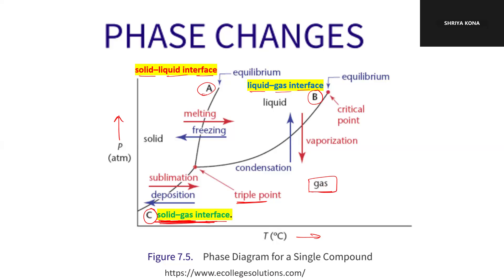The triple point is a point at which solid, liquid, and gas coexist together. When you are below the triple point, you can go directly from solid to gas via the process of sublimation. And definitely, if you are below the triple point, you can also go directly from gas to solid via the reverse process of deposition.